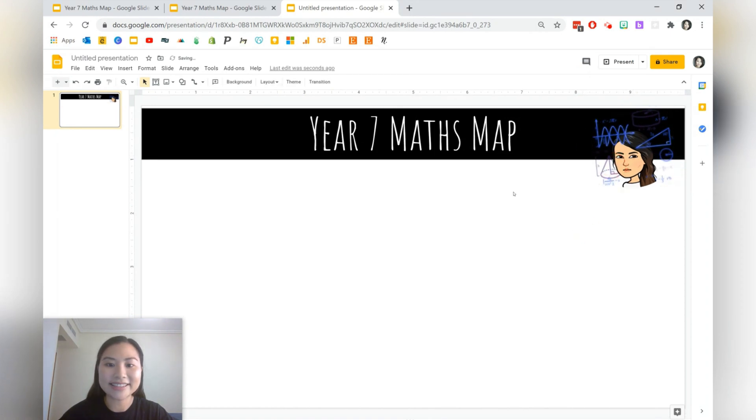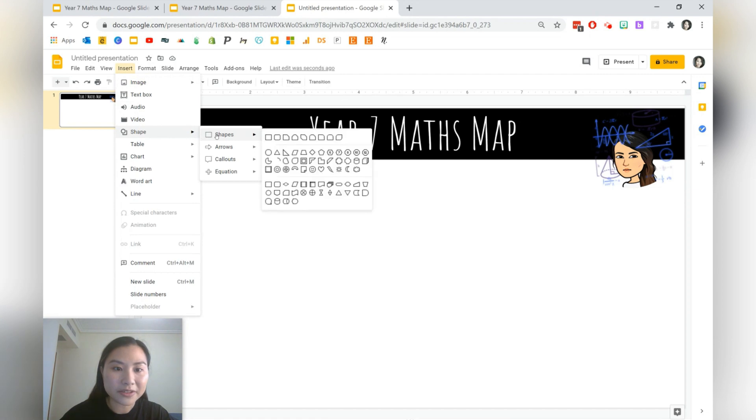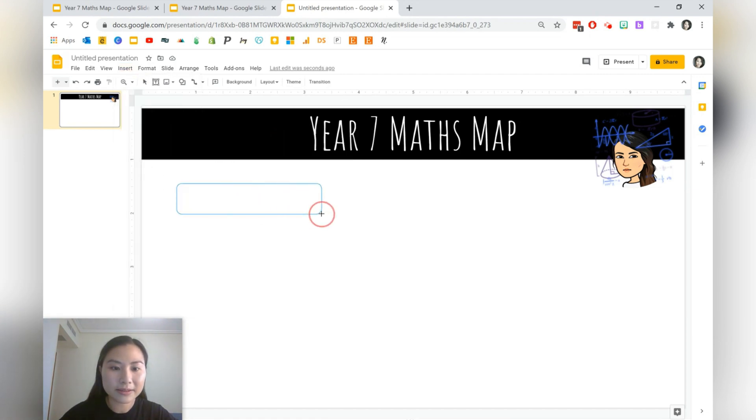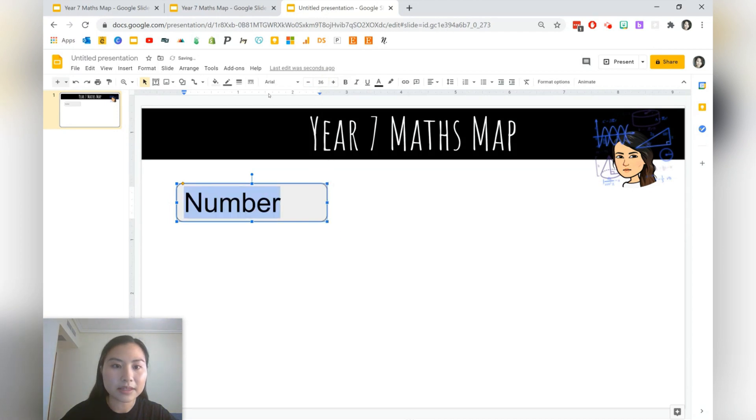Okay, and now we're ready to begin adding the topics. So I do recommend that you have your syllabus or reference material there because there are a lot of concepts within a subject. So let's go and insert a shape. I'm going to get a rectangular shape that has rounded corners. So here I'm going to write my first topic which is number and again just play around with the font a little.